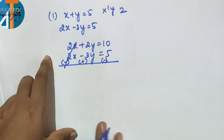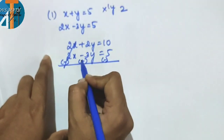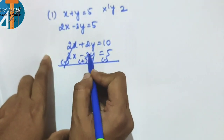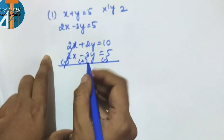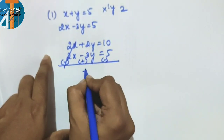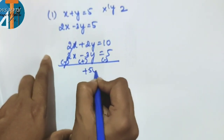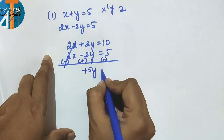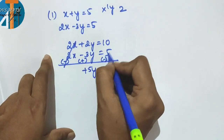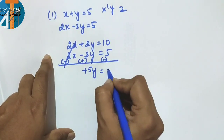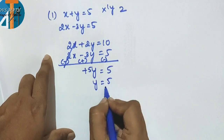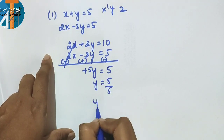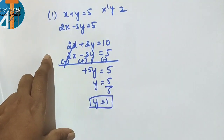After cancellation: plus 2 plus 3 gives plus 5y. So 5y is equal to 10 minus 5 = 5. Therefore y = 5 divided by 5, y is equal to 1.